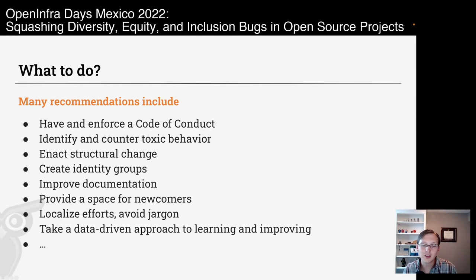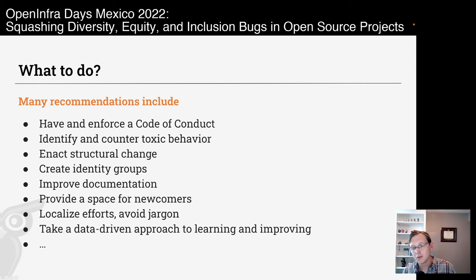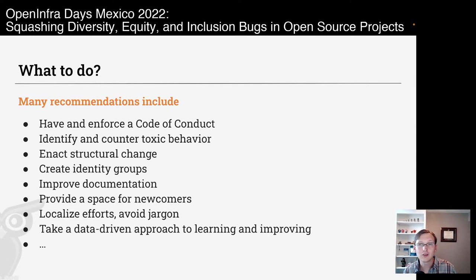We can also enact structural changes in our project. Open source is very much built around coding, software development, and the Git history. We want to recognize that there are a lot of people in open source who are not software developers — who are helping with bug triaging, organizing events, answering questions, testing the software, writing bug reports, translating. There are a lot of different ways people participate in open source, and we want our projects set up so we're not just focused on the developer but everyone who participates.